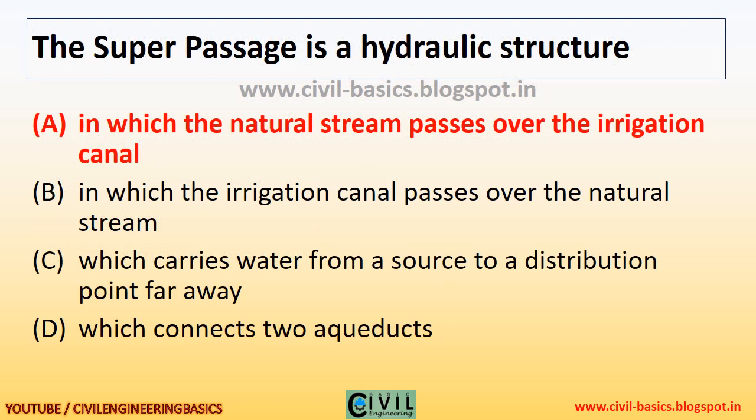The superpassage is a hydraulic structure in which the natural stream passes over the irrigation canal.